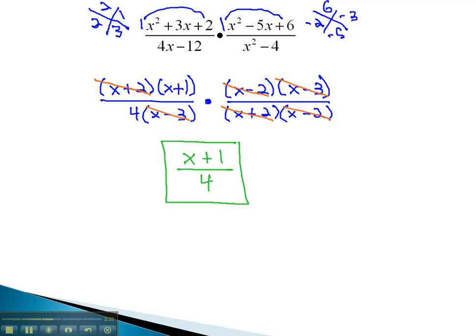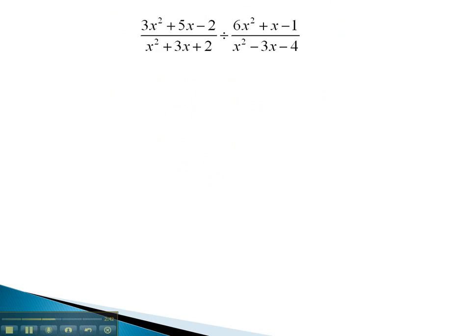Let's take a look at one more example, where we have to factor first before we're allowed to reduce, as a result of the pluses and minuses in the problem. In this problem, you notice we're also dividing, so we will have to take the second fraction and flip it.